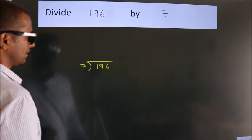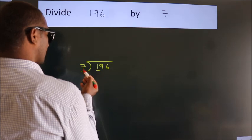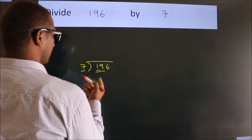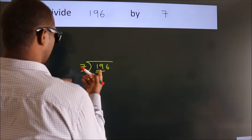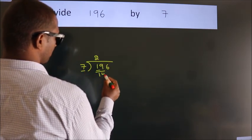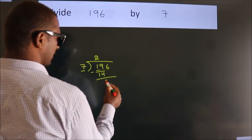Next, here we have 1, here 7. 1 is smaller than 7, so we should take 2 numbers: 19. A number close to 19 in the 7 table is 7 times 2, which is 14. Now we should subtract. We get 5.